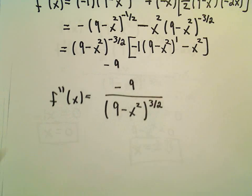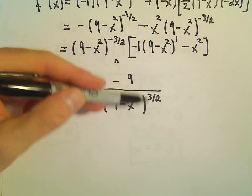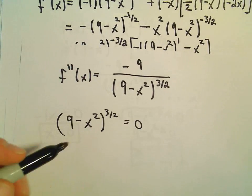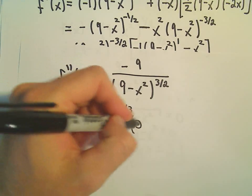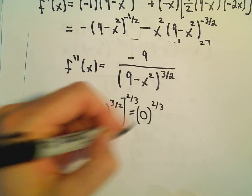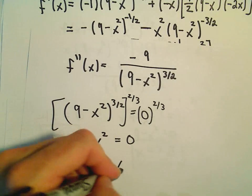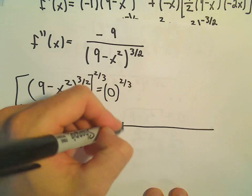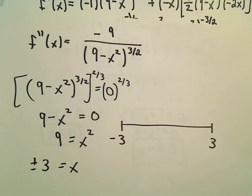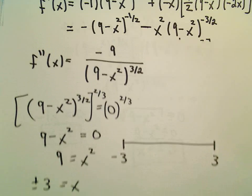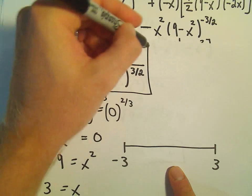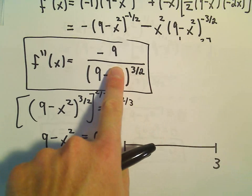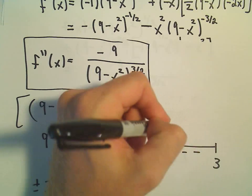To analyze concavity, we find where the second derivative is 0 or undefined. The numerator is negative 9, so the second derivative is never 0. Setting the denominator equal to 0 gives x equals positive and negative 3 — the endpoints of the domain. Testing x equals 0 in the interval: the denominator is positive (9 to the 3/2 is positive), and the numerator is negative 9, so the second derivative is always negative. This tells us the function is concave down everywhere on its domain.